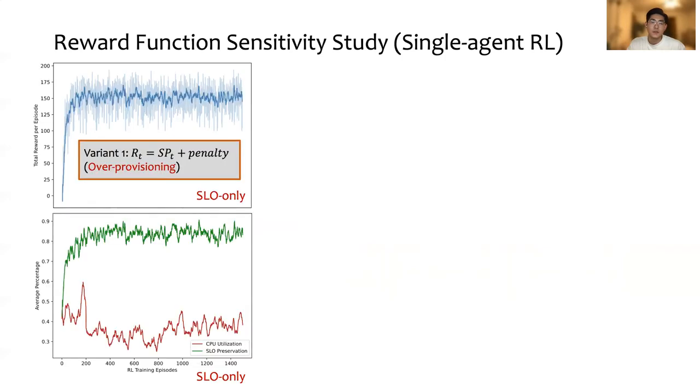We did a sensitivity study on the reward function to help justify the necessity of each part and the coefficient. The first variant is only to keep the SLO performance part in the reward function. The figure on the top shows the total reward per episode evolution as RL proceeds.